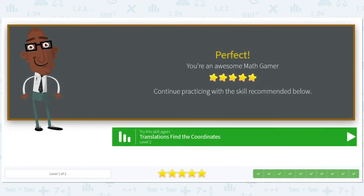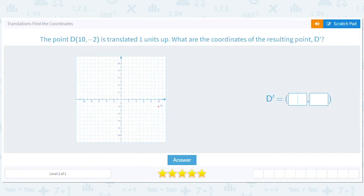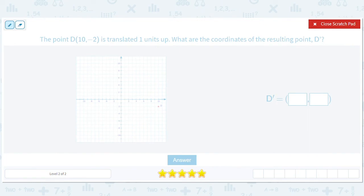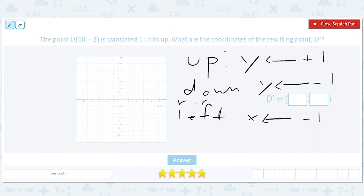Okay guys, let me just write something down for you. So up, y plus one. Down, y minus one. Left, sorry for my handwriting, x, well I should go in order but left, x minus one. I'll put the right here. Right, x plus one.